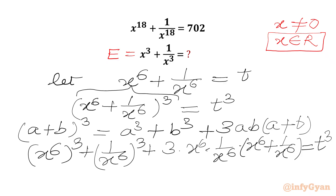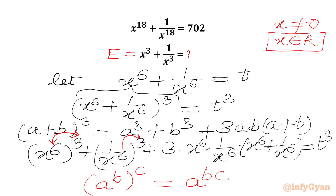Now we are going to use the exponential law which says (a power b) whole power c equals a power bc. We multiply 6 with 3 to get 18, so x power 6 whole cube becomes x power 18. The x power 6 in the numerator and denominator cancel, and the remaining (x power 6 plus 1 over x power 6) is t. So we get x power 18 plus 1 over x power 18 plus 3t equal to t cube.